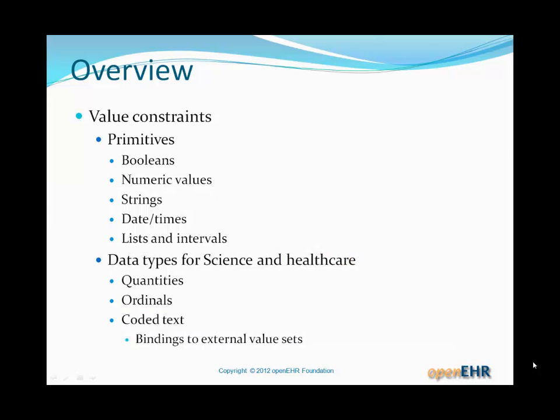There's an overview. There are two essential types of value constraint: constraints on primitives, which all you programmers out there will recognize - Boolean, strings, characters, numeric values and so on - and higher level data types. Here we're going to look at science and healthcare data types. If you're in a different industry sector, then you may have different data types.